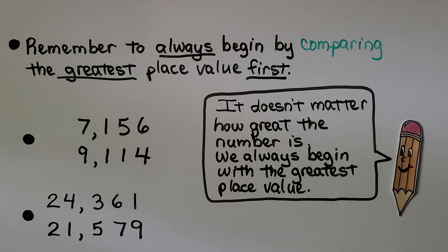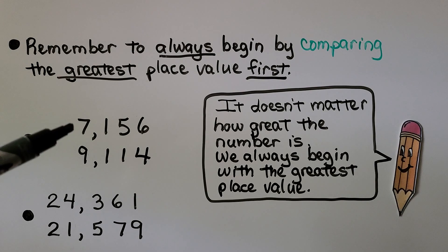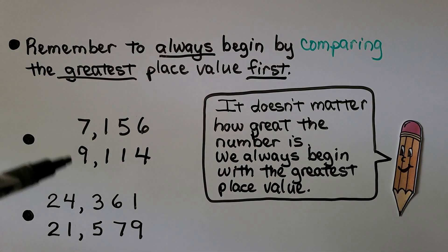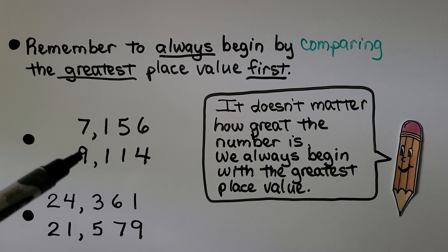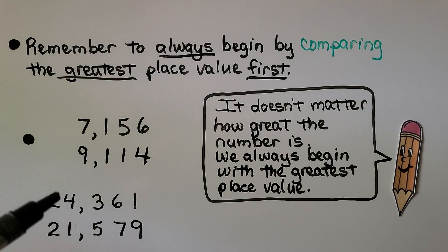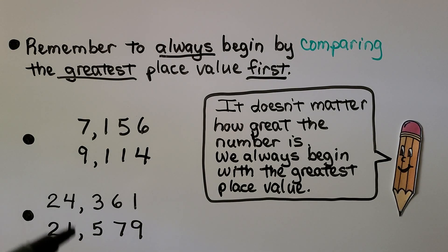Always begin by comparing the greatest place value first, no matter how large the number is. If we compare thousands — 7,000 versus 9,000 — we compare the thousands place, and 9,000 is greater. For 24,000 and 21,000, they both have a 2 in the ten-thousands place, so we look at the thousands place — 4,000 is greater than 1,000. It doesn't matter how great the number is, even millions — we always begin with the greatest place value first.